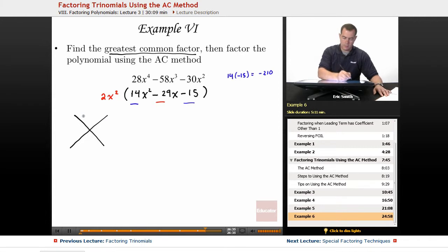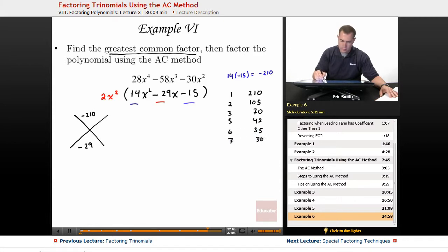Let's draw our box and really start hunting down some possibilities. Okay, so I have negative 210, must add to be a negative 29. Alright, we want to make this easy on ourselves, or at least as easy as possible. So I'm writing down possibilities that will multiply to be 210. So 1 and 210, 2 and 105, 3 and 70, 5 and 42, 6 and 35, 7 and 30, 10 and 21, 14 and 15.